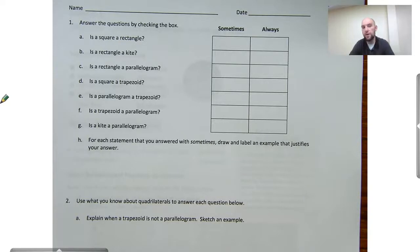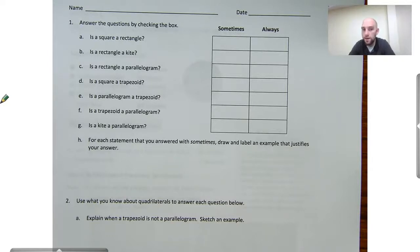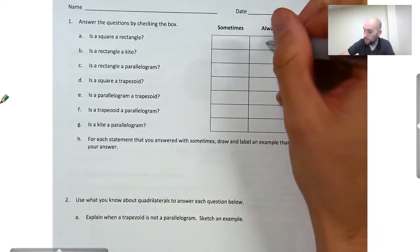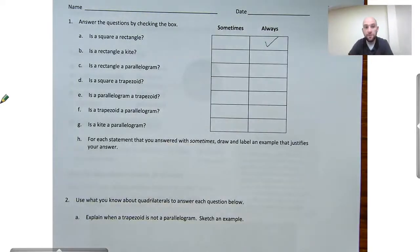Let's look at letter A. It says: is a square a rectangle? A rectangle needs to have four right angles — it's a quadrilateral with four right angles. A square has four right angles, but a rectangle does not require that all sides are the same length. So every square is a rectangle, but every rectangle is not a square. Is a square a rectangle? Yes, a square is always a rectangle, because every square has four right angles, and that's the requirement to be a rectangle.